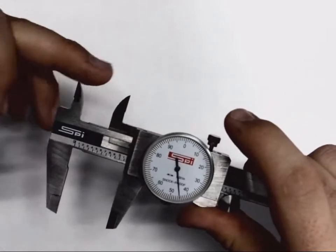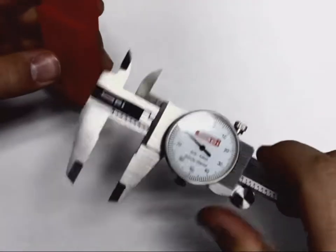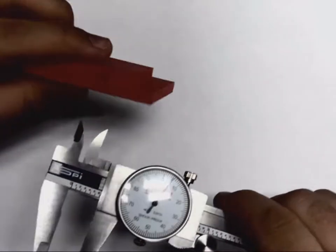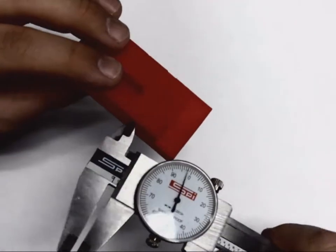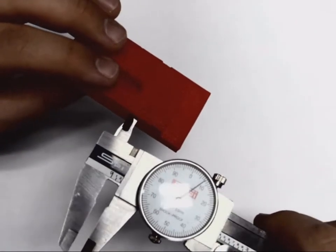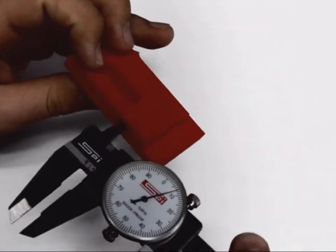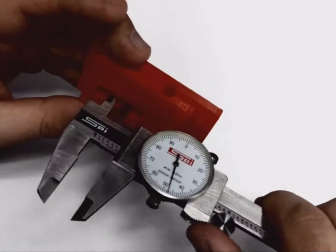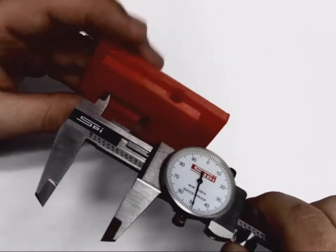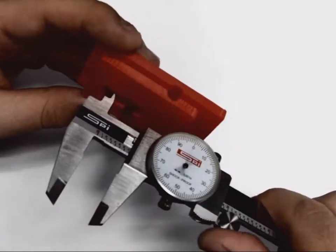You have the inside measuring faces up here on top. The inside measuring faces are typically used to measure the insides of different components. Like for here, I have a hole. I can put that into the hole, open it up till the edges touch the inside of the hole. You could also use it for the slot on the top of this, to be able to open this up and measure onto the outside edges.